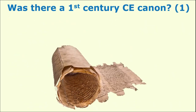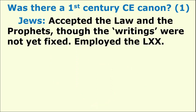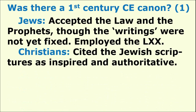Was there a first century CE Canon? We know that Jews accepted the Law and the Prophets, though the writings were not yet fixed. Jews largely employed their Greek translation, which we call the Septuagint, abbreviated LXX. The early Jews who were Christians still cited the Jewish scriptures as inspired and authoritative.